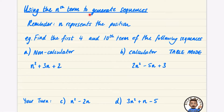We're going to use the nth term to generate sequences. As a quick reminder, the value of n represents the position in the sequence. We're going to do a non-calculator method and then a calculator method, and I'm going to teach you about table mode in case you don't already know about it. We want to find the first four terms and the tenth term of the following sequences.